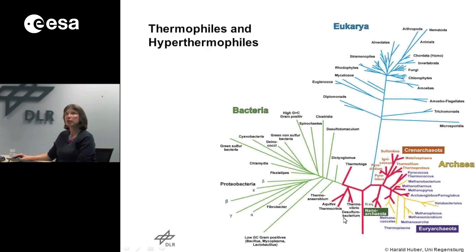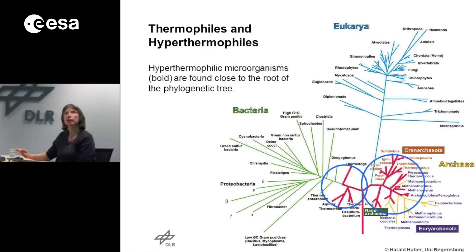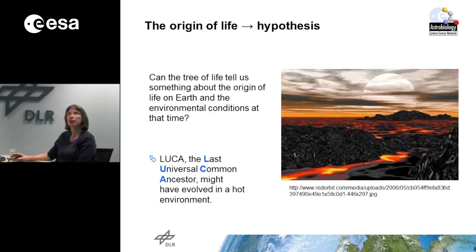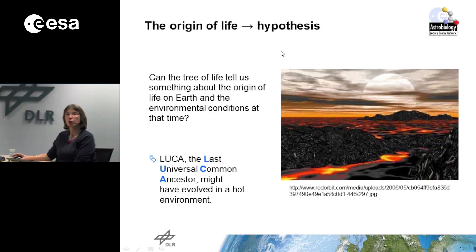In this picture you can see a more detailed phylogenetic tree with different branches of the bacteria, archaea. We are interested in hyperthermophilic organisms, shown here in bold, and they are found close to the root of the phylogenetic tree. This might give us some hints about the origin of life on earth — the question is whether the tree of life can tell us something about the environmental conditions at that time.